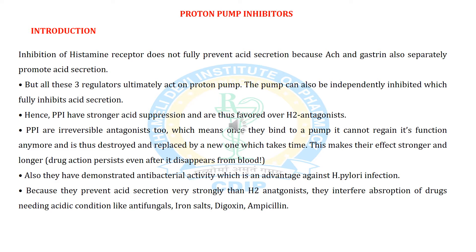What is a proton pump inhibitor? Proton pump inhibitors are agents which stop the working of the proton pump situated in the mucosa of the stomach. Inhibition of histamine receptors does not fully prevent acid secretion because acetylcholine and gastrin also separately promote acid secretion. But all three regulators ultimately act on the proton pump, which can be inhibited to suppress acid secretion. Hence PPIs have stronger acid suppression and are thus favored over H2 antagonists.